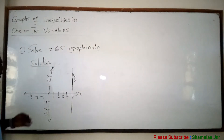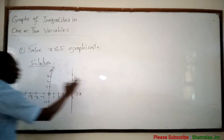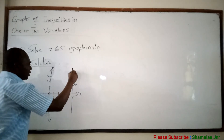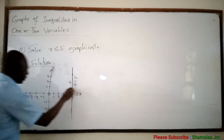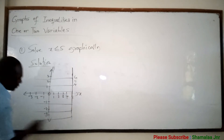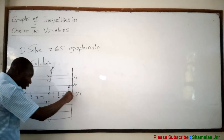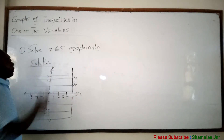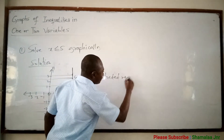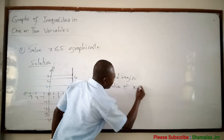Now, when you are done with this, you want to find the solution. Is the solution at this side or at this side? Because we are saying x is less than or equal to 5, it means that the solution should be from here to this side. So the shaded region will be the solution of this inequality. When you pick any x value which is on this line or at this side, it should satisfy the inequality. Therefore, the shaded region is the solution of x less than or equal to 5.